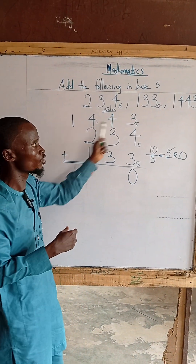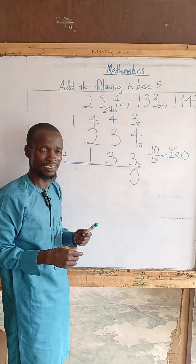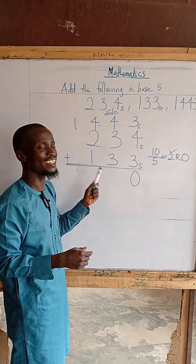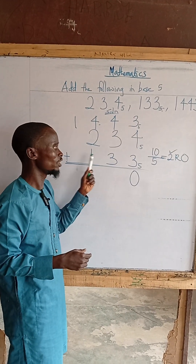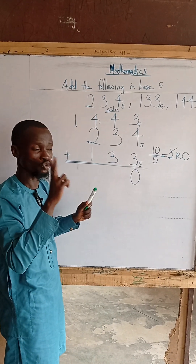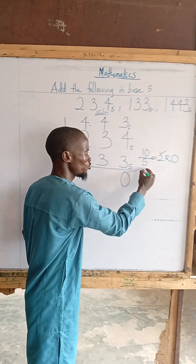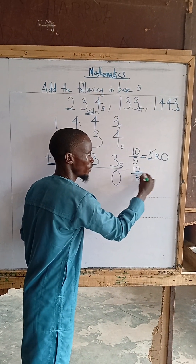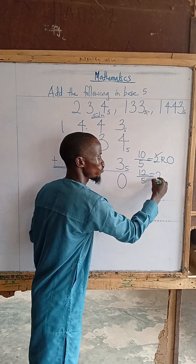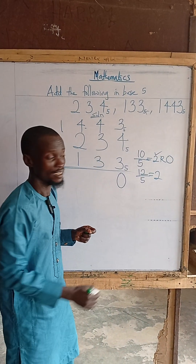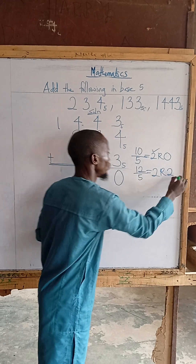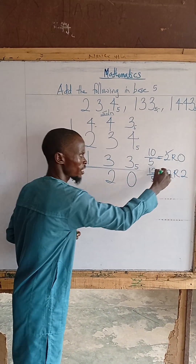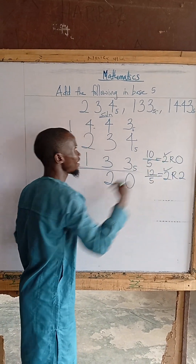We now carry the 2 and add it to the next column digits: 2 plus 4 makes 6. 6 plus 3 makes 9. And 9 plus 3 gives us 12. We do the same thing — 12 divided by 5 gives 2 remainder 2. We write 2 and carry 2.